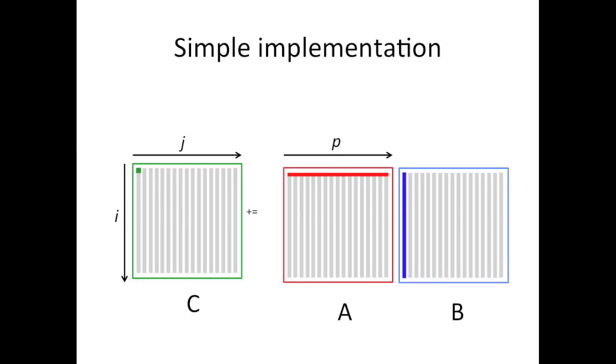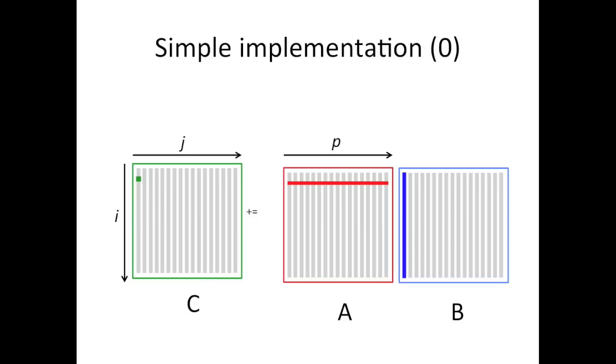So each of those gray bars represents a column in the matrix. The way the very simple implementation works is elements of C are computed as dot products of the corresponding row of A with the corresponding column of B. And you may want to organize your loops so that you go down the columns of C as you compute.